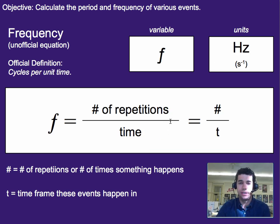Now frequency is just the inverse, hence inverse seconds or hertz as its units. The variable is this italicized or cursive f and we just take the number of repetitions divided by the time, and that gives us the number of things per a second or per a minute.